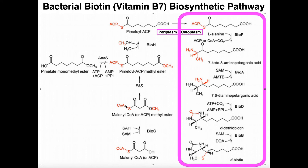ACP serves a very similar function to coenzyme A. To generate pimeloyl-ACP, we can use one of two starting sources: malonyl-CoA, which is ultimately derived from acetyl-CoA, or we can form pimeloyl-ACP through pimeloate monomethyl ester, which is fairly similar to pimeloyl-ACP. The main differences are that this carboxyl group has been methylated — you can see the O-methyl group on the monomethyl ester — and the ACP sulfur has been hydrolyzed away spontaneously. This is more or less a waste product of pimeloyl-ACP, but it can be reprocessed back into pimeloyl-ACP.